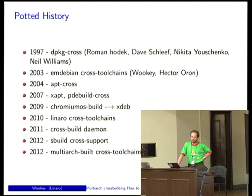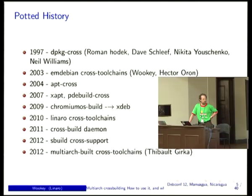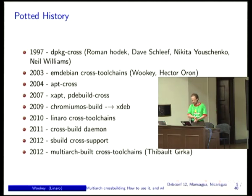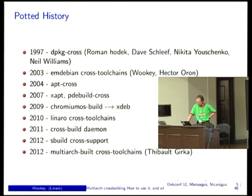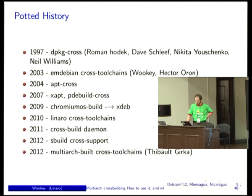Cross-building support in Debian has existed for many years. Roman Hodek started dpkg-cross in 1997, which was a hacky script that kind of worked, developed by various people over 15 years. Debian has also been providing cross toolchains for many years. Apart from having a cross compiler, you also need to install build dependencies in a cross-aware fashion. apt-cross was the first tool for doing that.